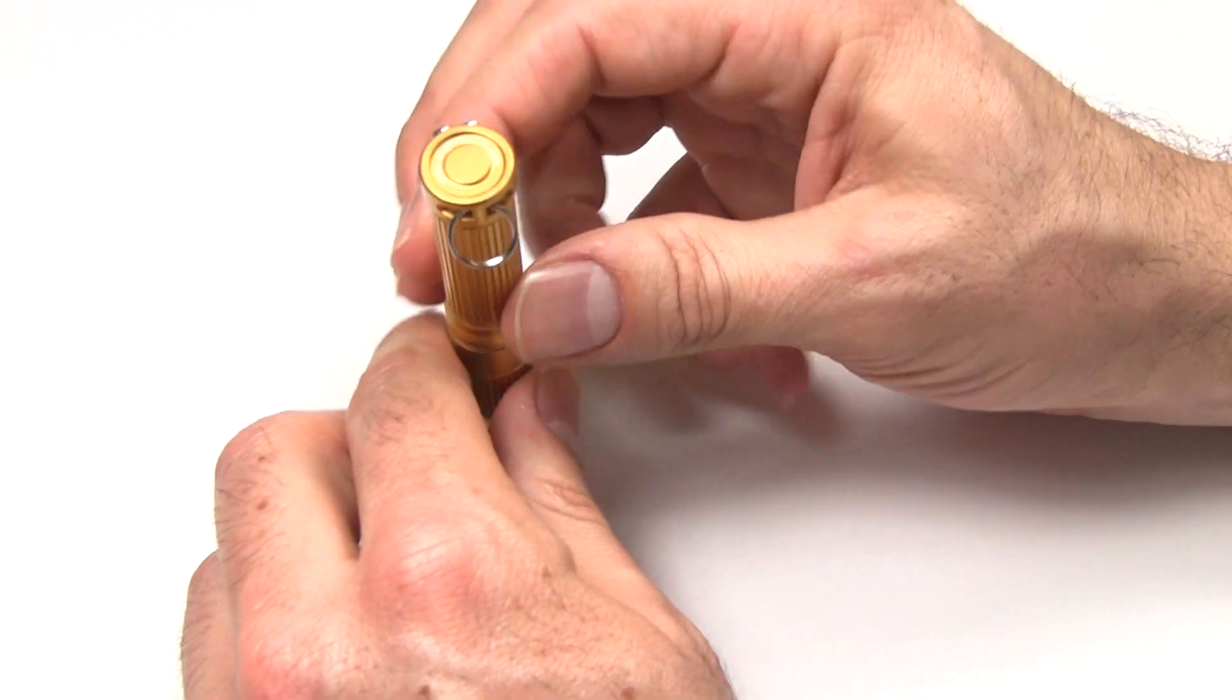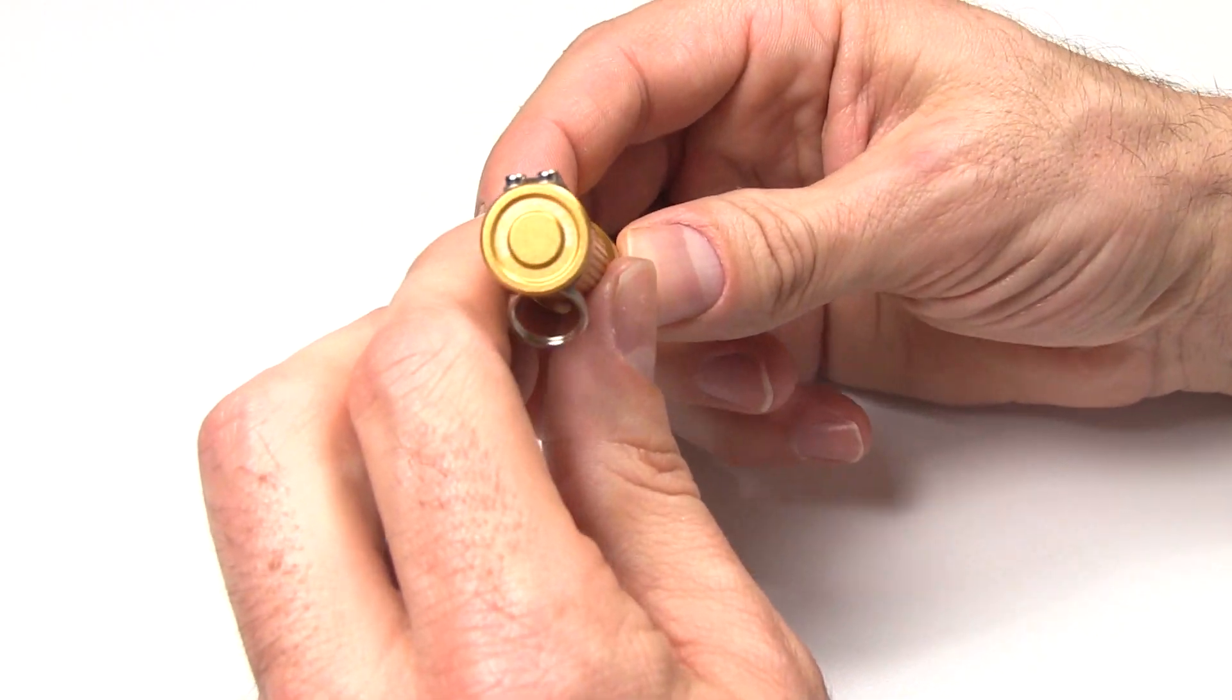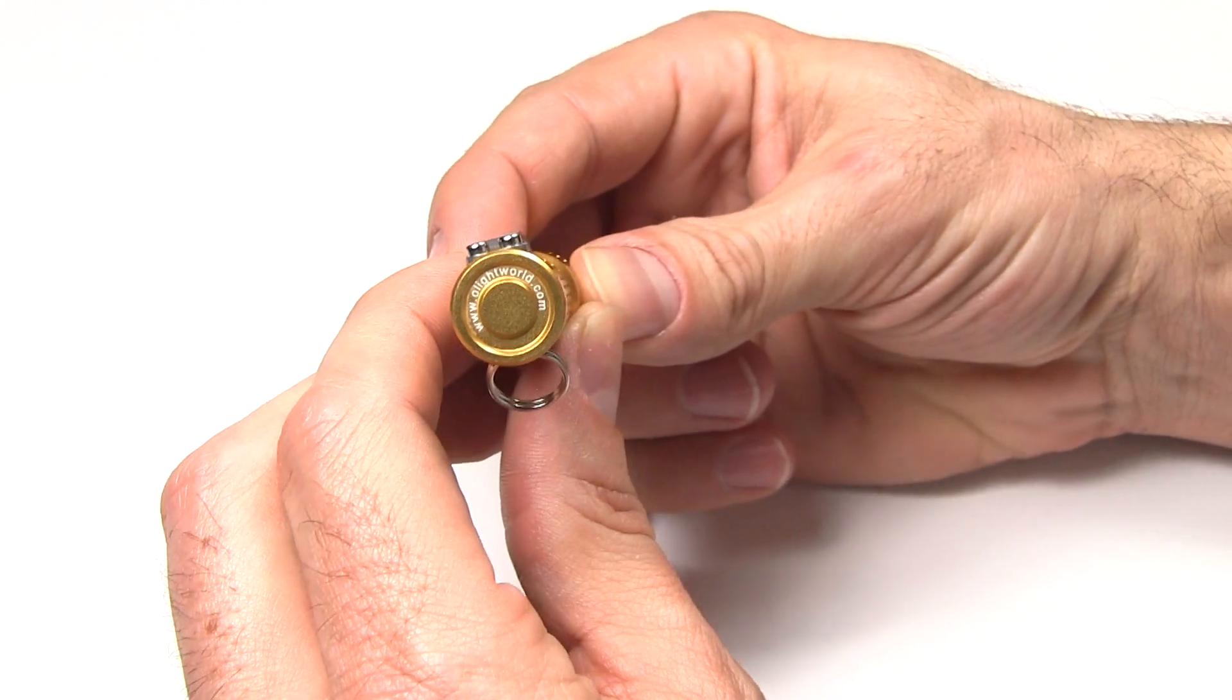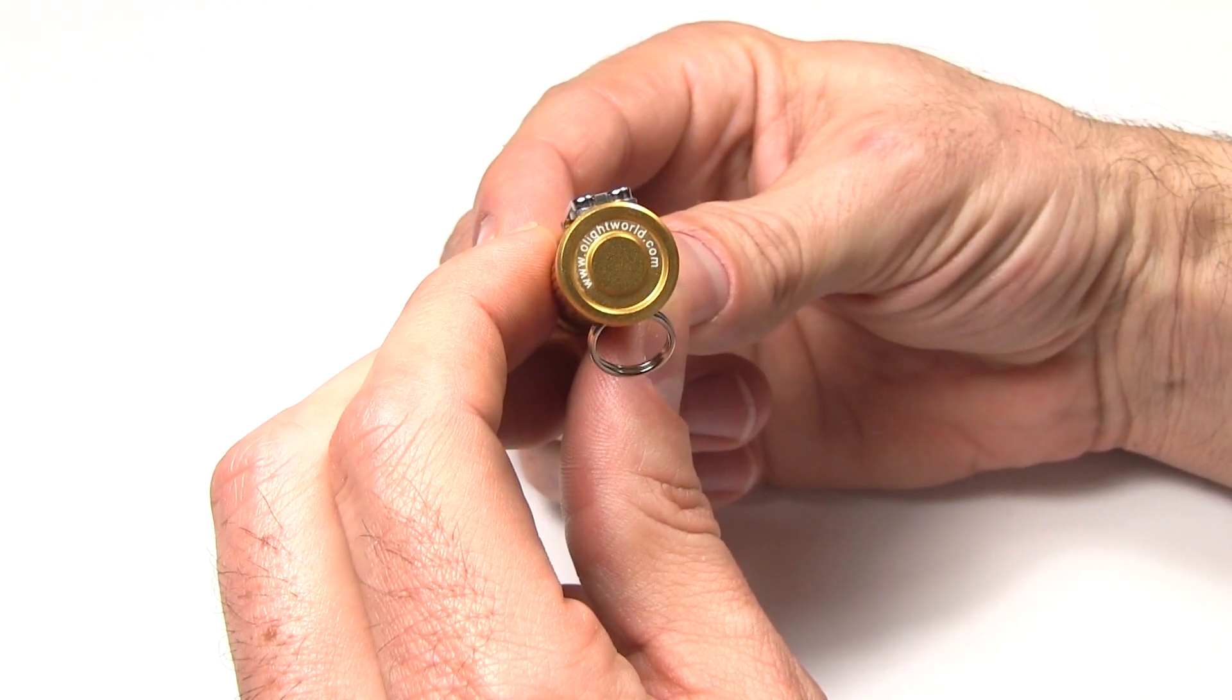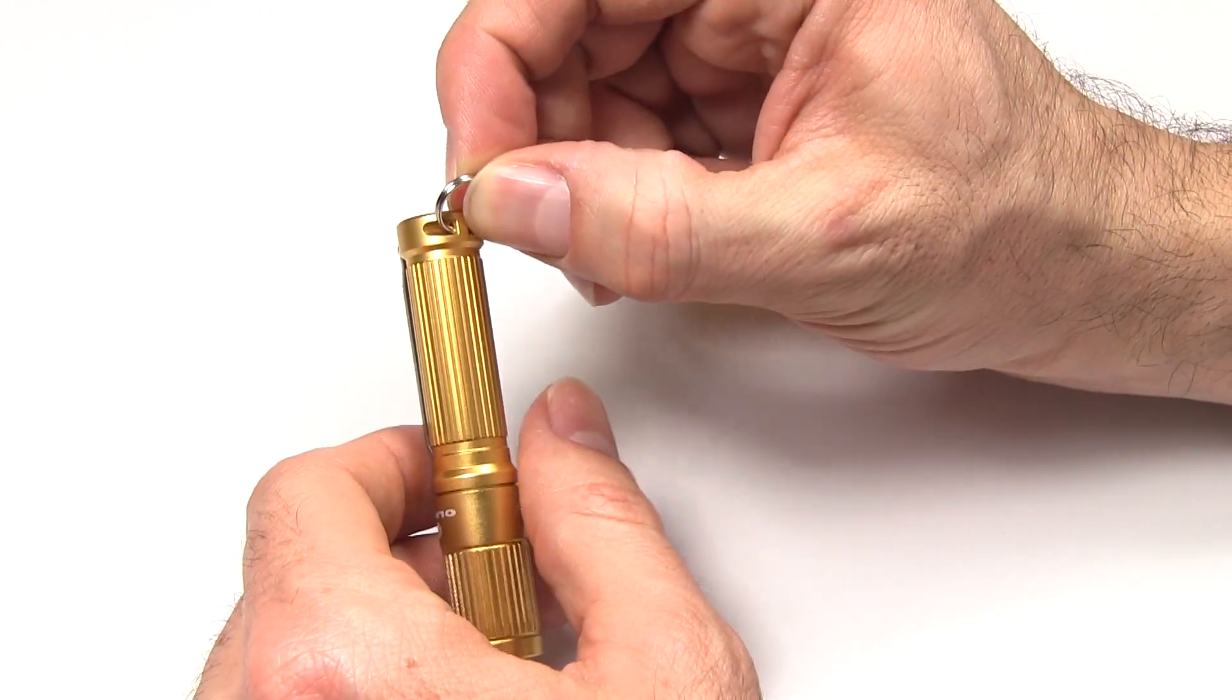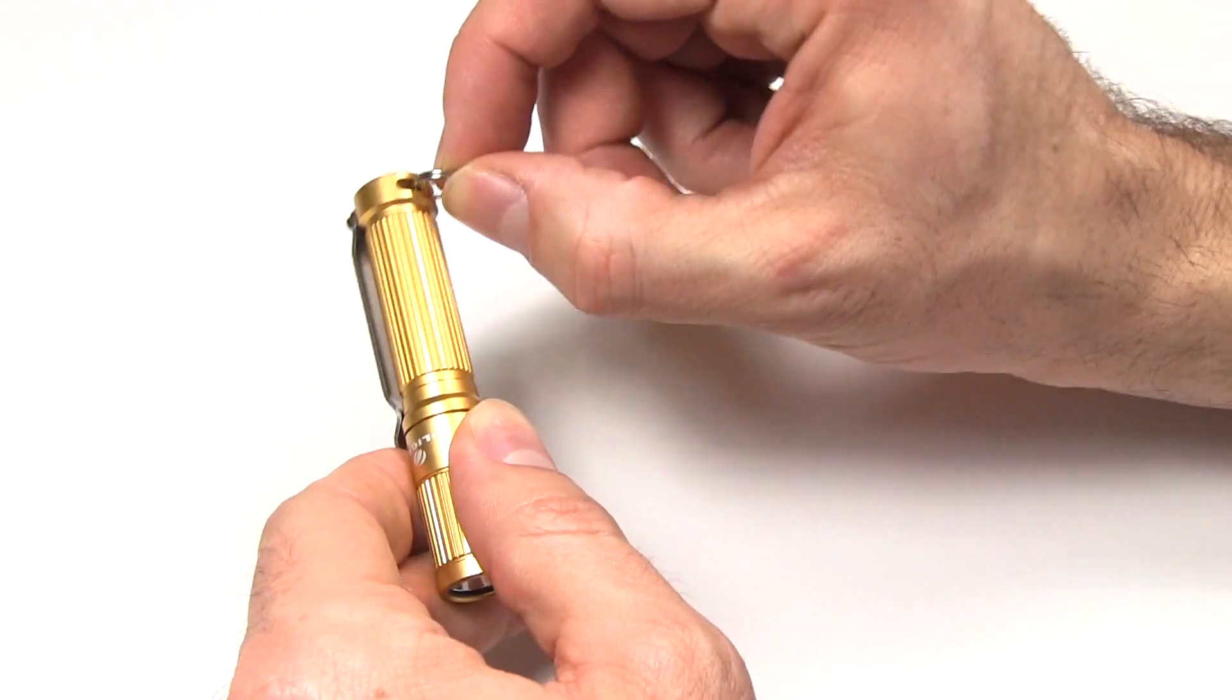Looking at the construction of it, we'll go back to front. On the back of the tail cap here, they have the Olight website, olightworld.com. You can use this light on a keychain by affixing it here, alternatively you can just take this thing off.